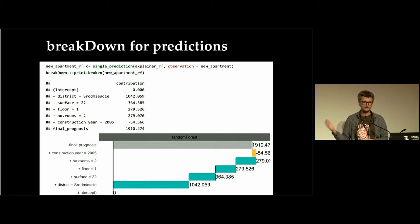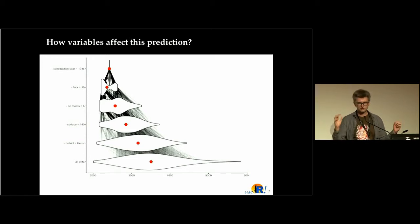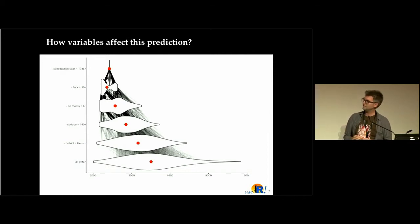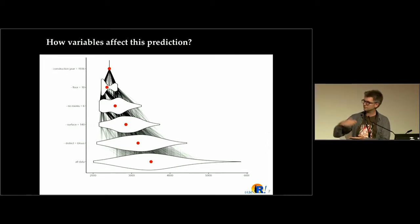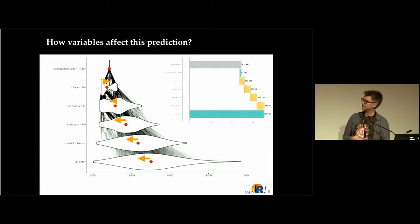It's easy for linear models, and maybe not straightforward for random forest models, but it turns out you can do this for any kind of model. You can imagine a population of observations with predictions for every observation, and you need to go from the whole population of predictions to a prediction for a single observation. During this process you freeze every coordinate — setting all observations to have district equal to Ursus, or surface equal to something — so you are changing the distribution of predictions, and you can extract which variable has how large importance.